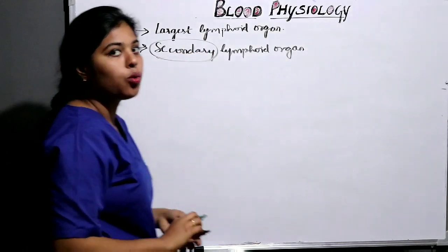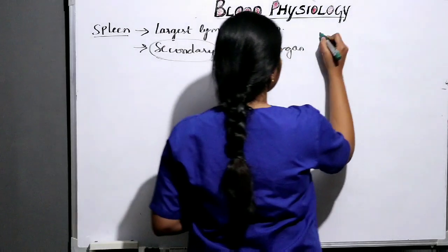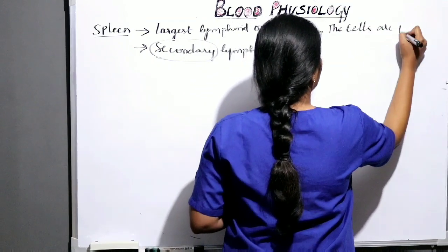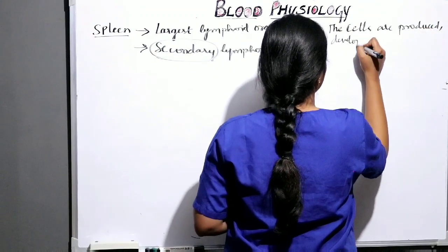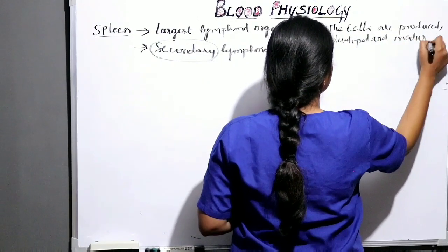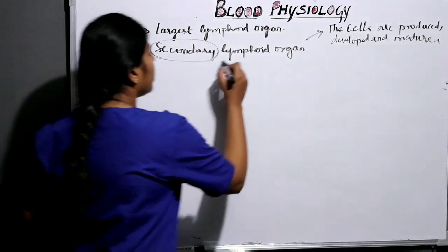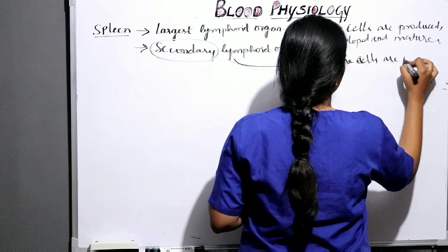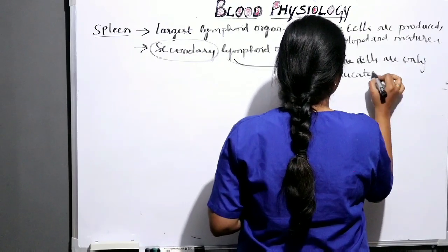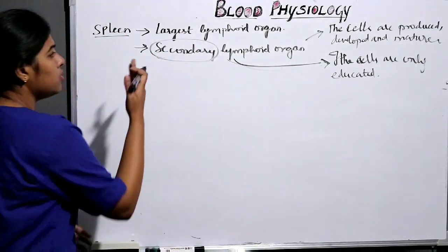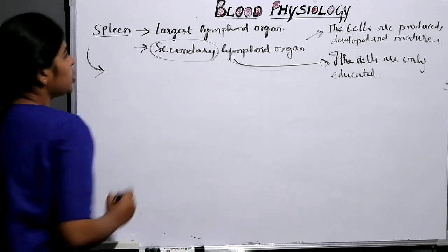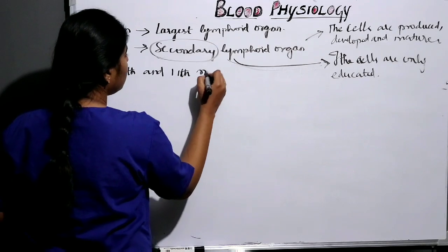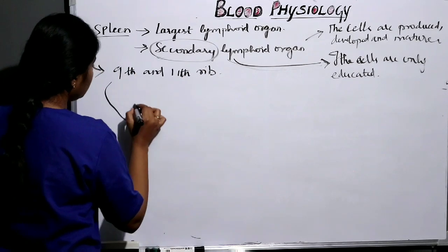What is the difference between secondary and primary lymphoid organs? In primary lymphoid organs, the cells are produced, developed, and mature at the same site. In secondary lymphoid organs, the cells are only educated — that is, how to fight against pathogens for immunity. The spleen is situated between the 9th and 11th rib and has a somewhat wedge or shoe shape.